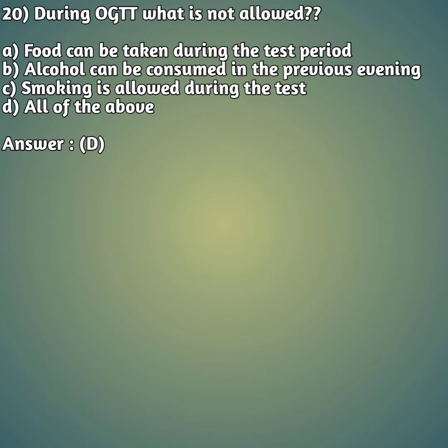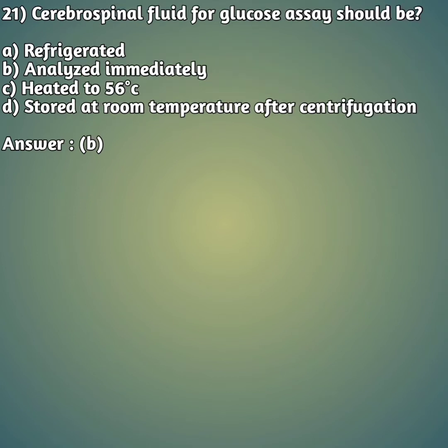Question 20: During OGTT (oral glucose tolerance test), what is not allowed? You must follow protocol criteria to get an accurate result. Option A: food can be taken during the test, option B: alcohol can be consumed the previous evening, option C: smoking is allowed during the test, option D: all of the above. The right answer is option D — all of the above are not allowed during the OGTT procedure.